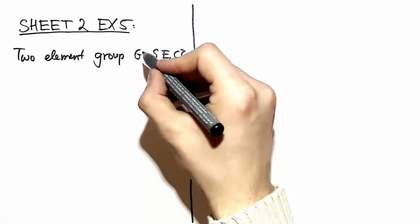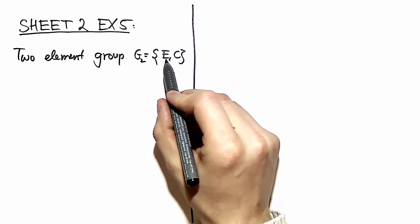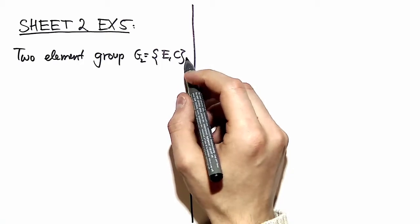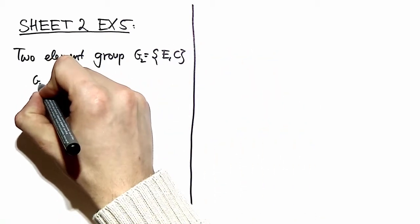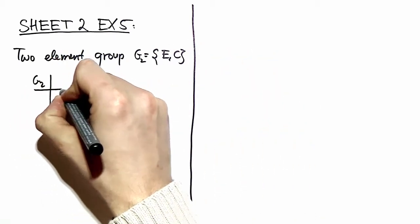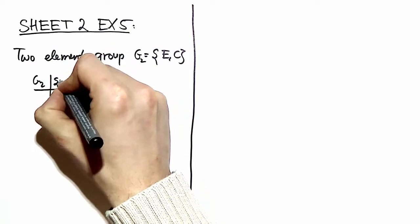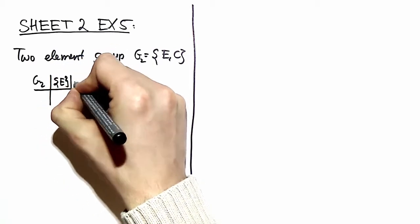We have a group G2 consisting of two elements, E and C. If we construct the character table for G2, we have both elements belonging to different conjugacy classes.